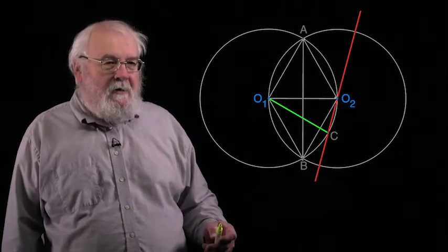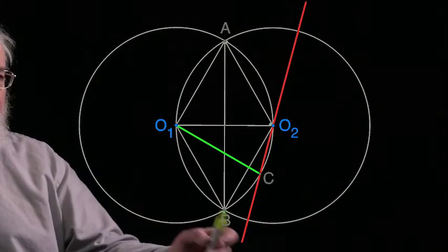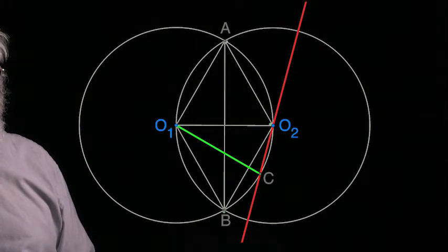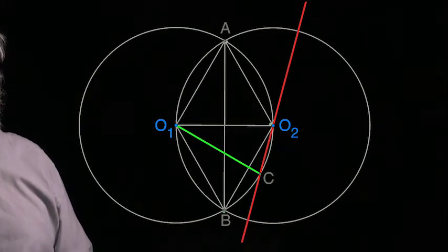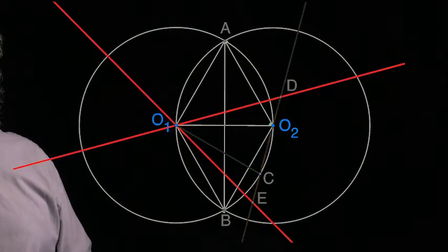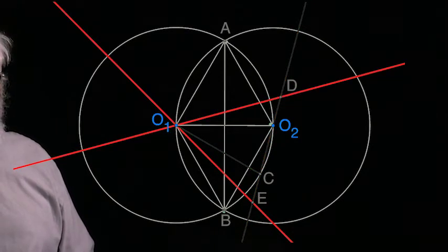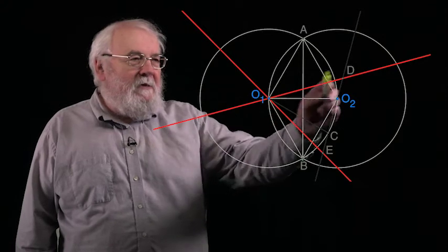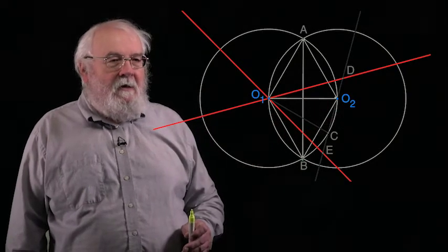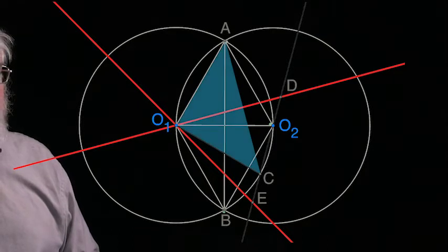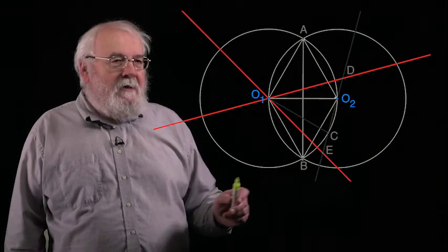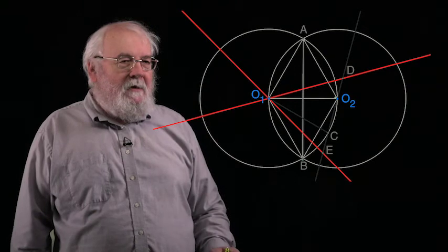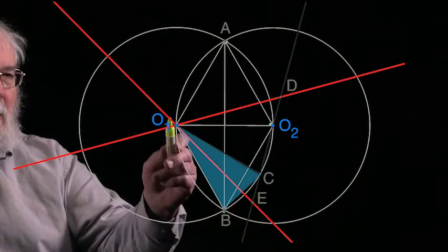We've also drawn the radius in, the green radius from O1 to C. Now we've got lots of isosceles triangles because we have lots of radii in play. What we've done now is to draw the angle bisectors. So this angle bisector is the angle bisector of A, O1, C. Similarly, the other angle bisector, the red line sloping down like this, is the angle bisector of C, O1, B.